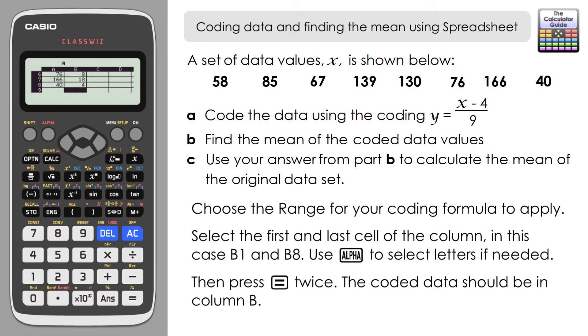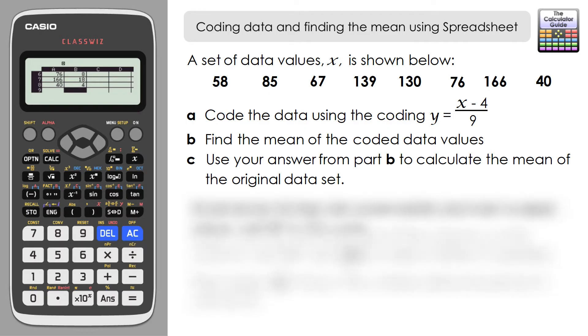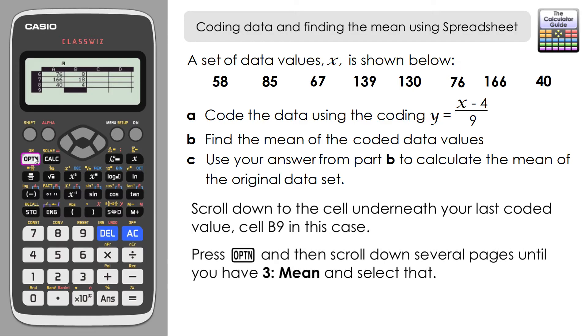Scroll down to the cell underneath the last value in your coded data. We're going to input the mean into this cell. That is an option from the option menu. Press option and continue to scroll down until you get to this menu. See option three, mean. Press three and a set of brackets will be opened. Now we need to input the range.